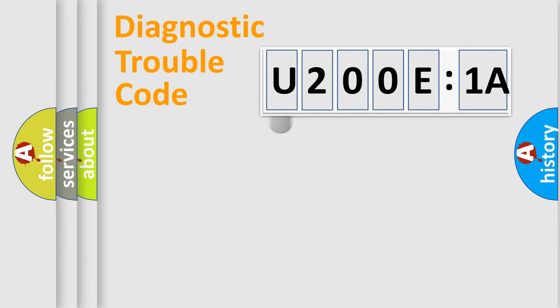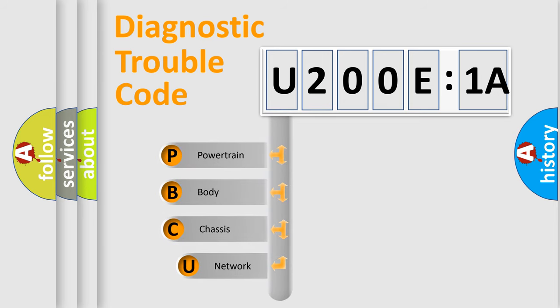First, let's look at the history of diagnostic fault code composition according to the OBD2 protocol, which is unified for all automakers since 2000. We divide the electric system of automobile into four basic units.